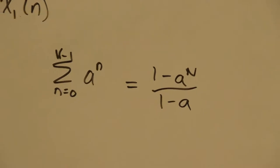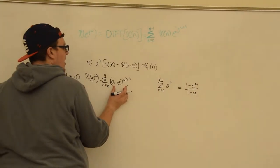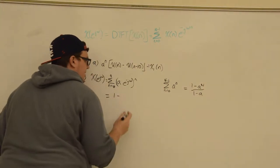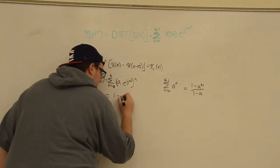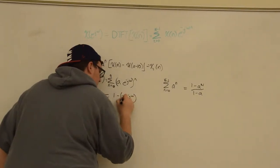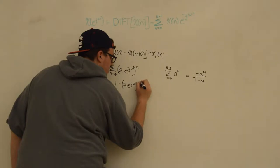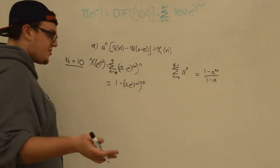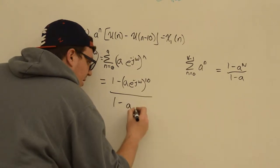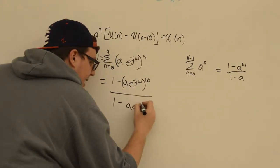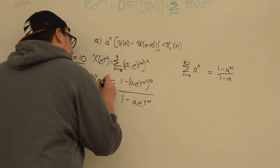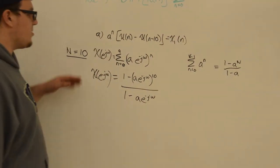We apply this formula, but instead of a, here it's a * e^(-jω). What we get is (1 - (a * e^(-jω))^10) divided by (1 - a * e^(-jω)), where N = 10. You can distribute the exponent if you want, but leaving it in this form is fine. That is our discrete time Fourier transform of the original function x1.